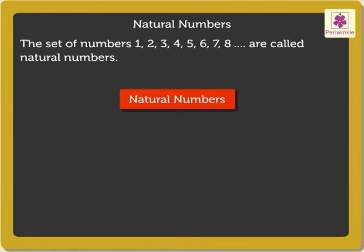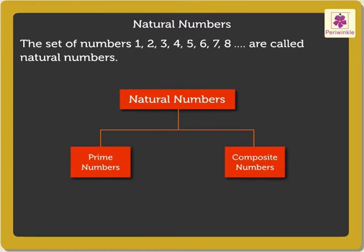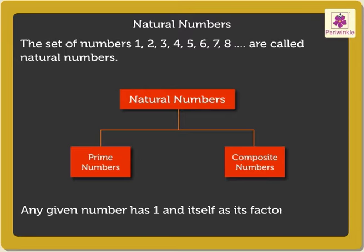Natural numbers can be divided into prime numbers and composite numbers. Before we proceed ahead, remember that any given number will always have 1 and itself as its factors.